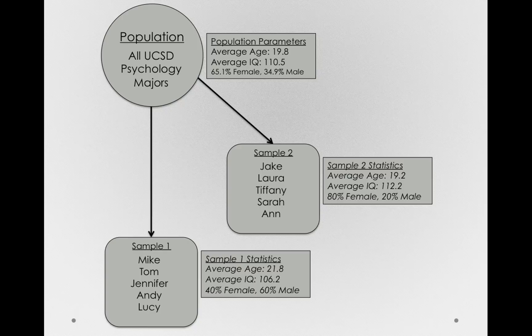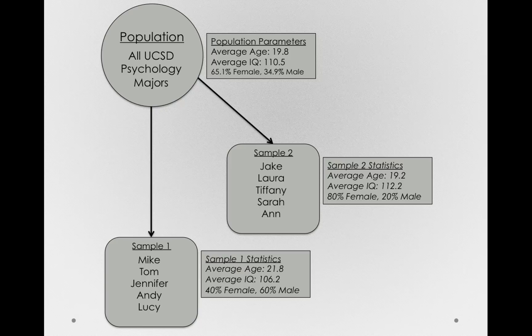So in sample two, the average age was 19.2. The average IQ, 112.2. And in this sample, it was 80% female and 20% male.